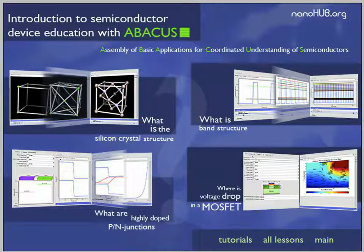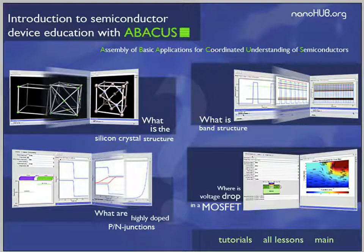Here is another complete course set. We call it Introduction to Semiconductor Devices with Abacus, which is an assembly of basic applications for coordinated understanding of semiconductors. In most electrical engineering schools there is a semiconductor course that teaches about silicon crystal structure, crystal structures, band structure, PN junctions, and MOSFETs. We have now assembled a set of tools into Abacus that allows people to run simulations and visualizations for this type of class.